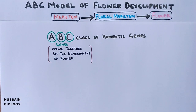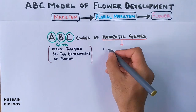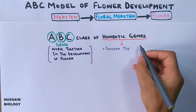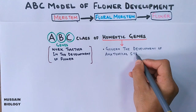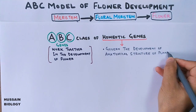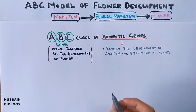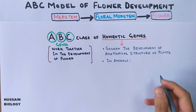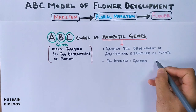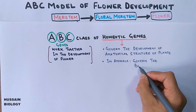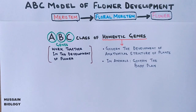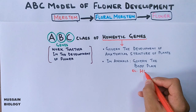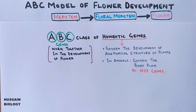Homeotic genes are the genes that govern the development of anatomical structures in plants. In the case of animals, homeotic genes govern the body plan and its structures — for example, Hox genes are the homeotic genes in our body.